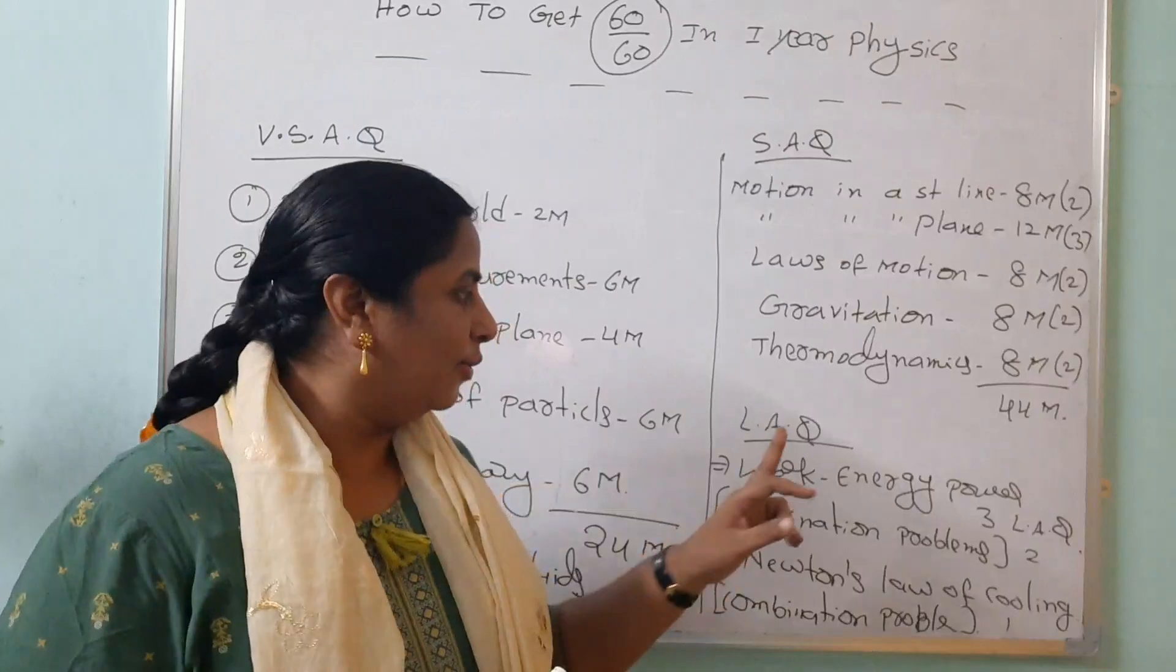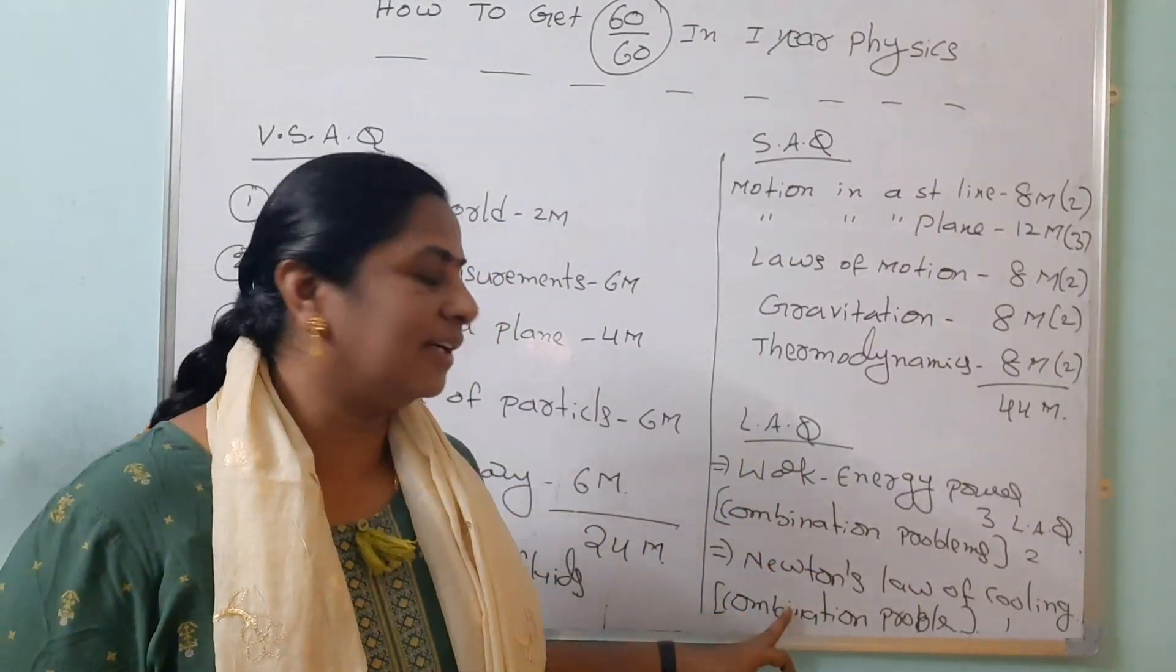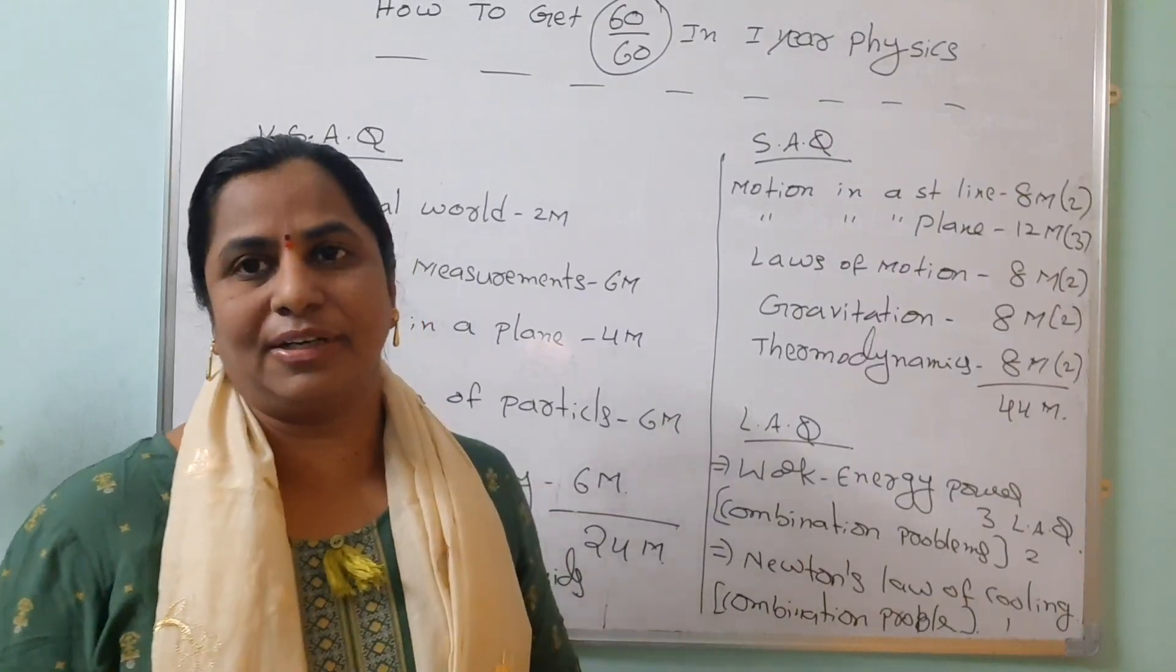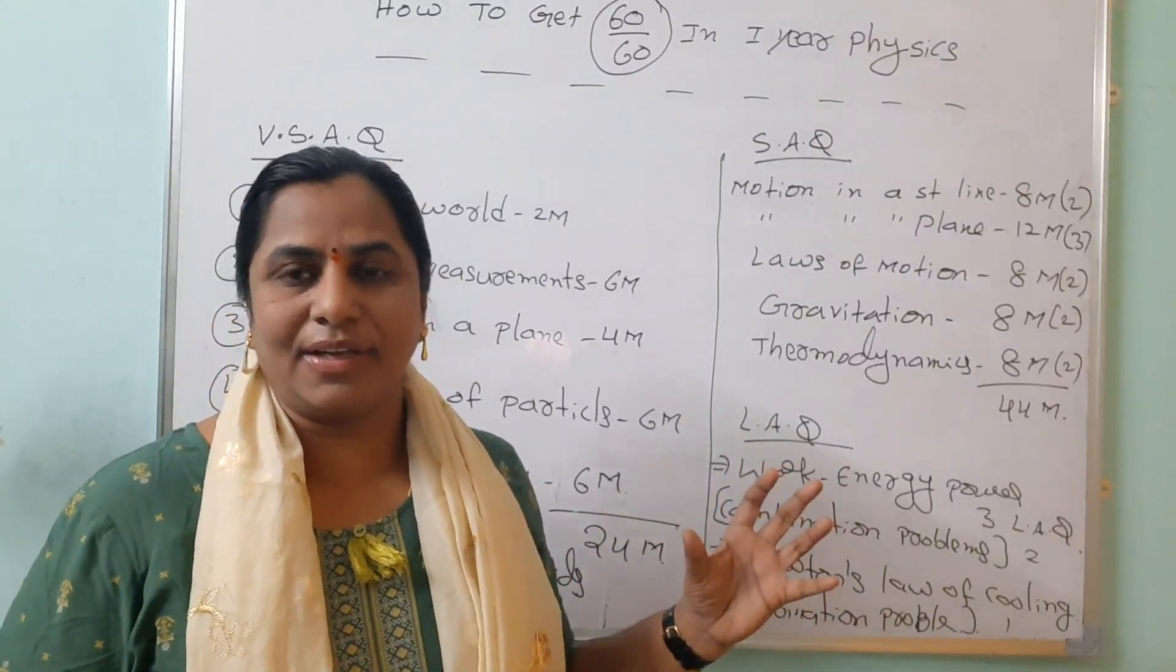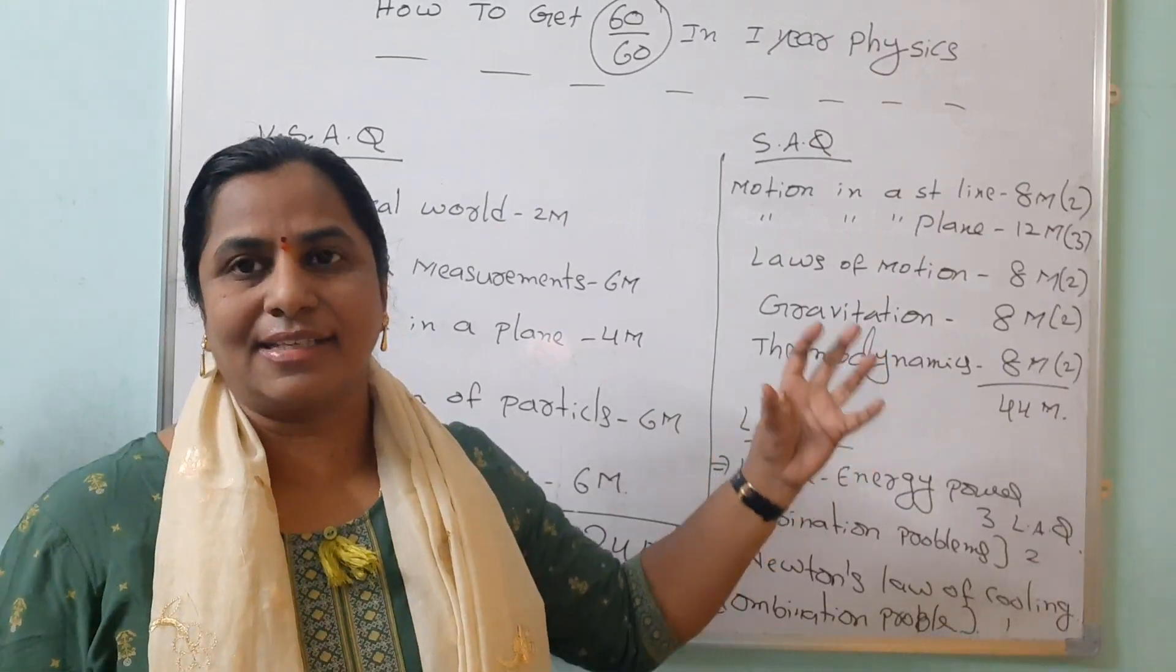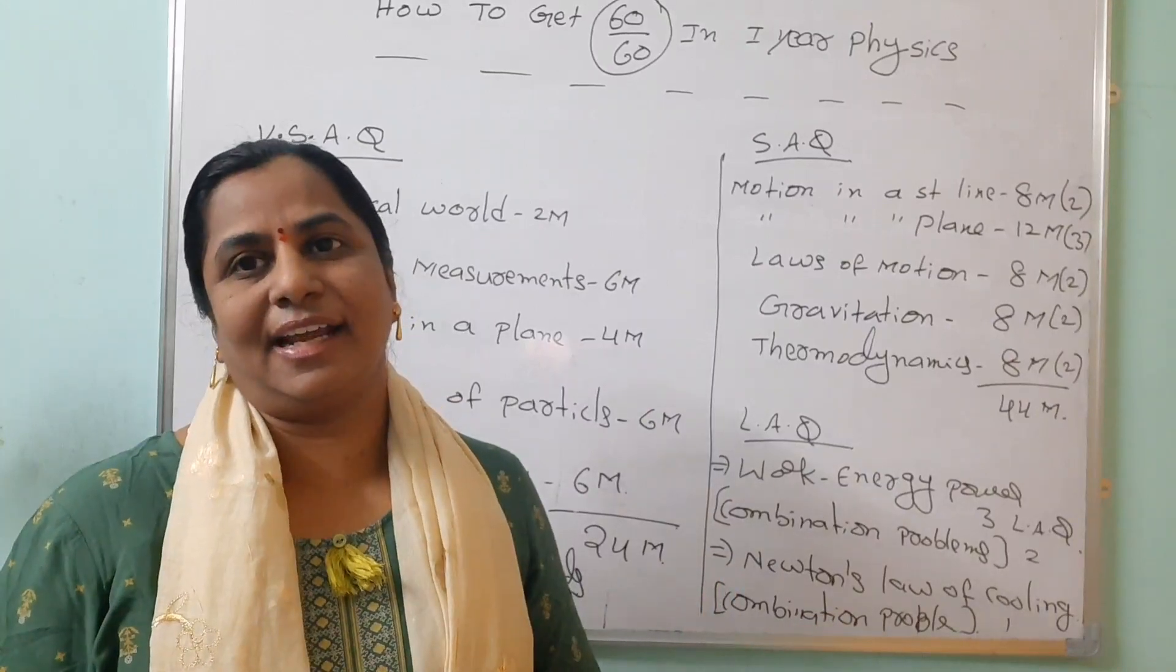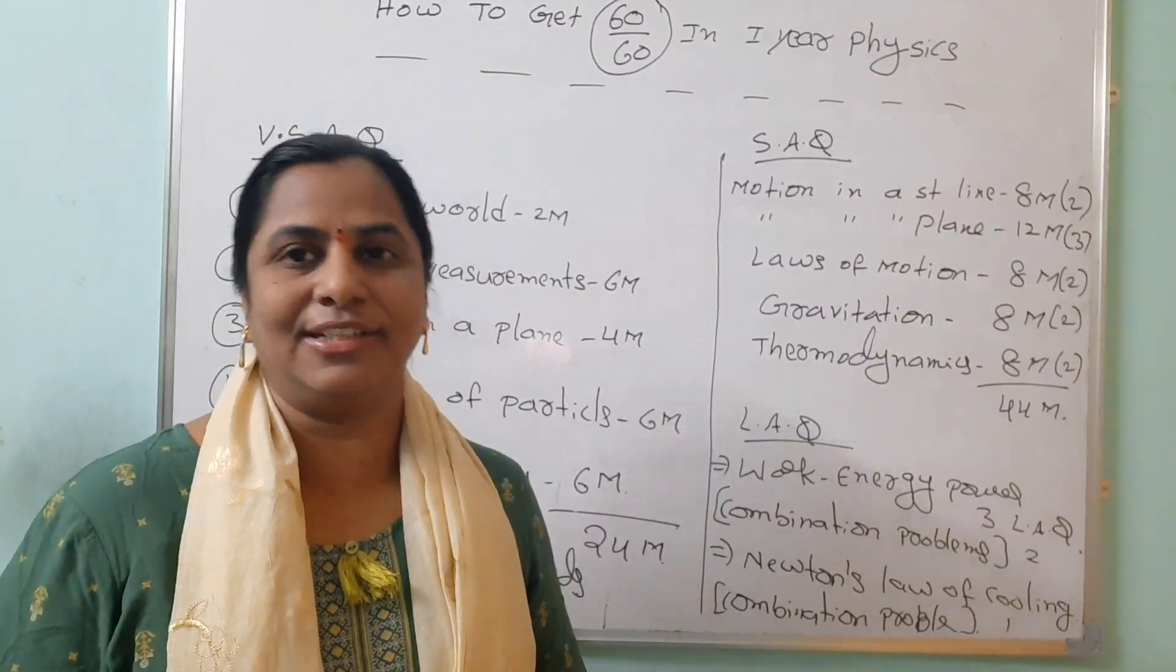But the most important thing to get the 60 marks is don't leave the combination problems in work energy power, and don't leave the combination problem along with Newton's law of cooling. Already I have given in my videos playlist - you can see that along with long answers I have given combination problems. If you are practicing that, definitely you will get 99.9% 60 by 60 in first year physics.